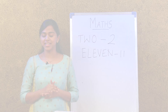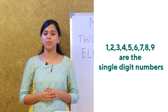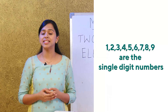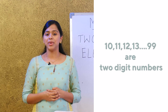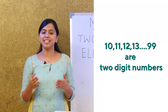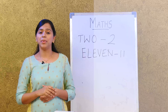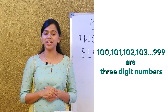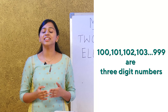Single digit numbers are 1, 2, 3, 4, 5, 6, 7, 8, 9. Two digit numbers go from 10, 11, 12, 13 all the way to 99. Three digit numbers go from 100, 101, 102, 103 all the way to 999.